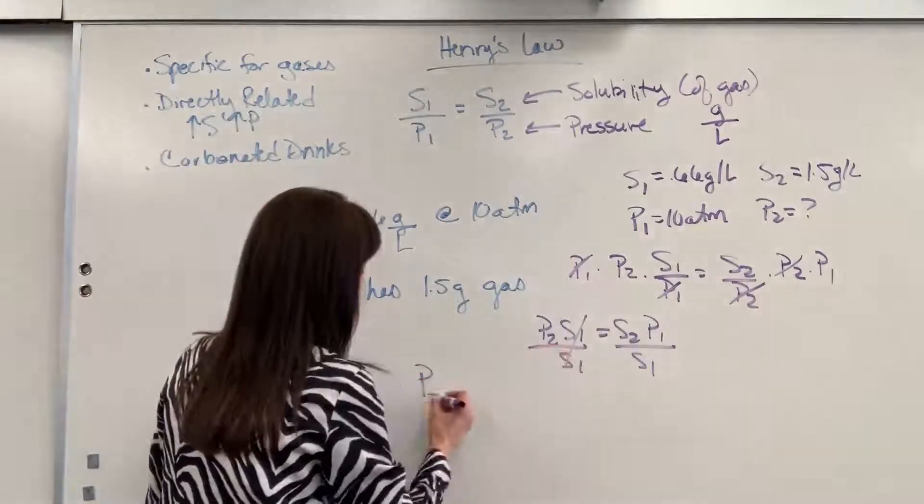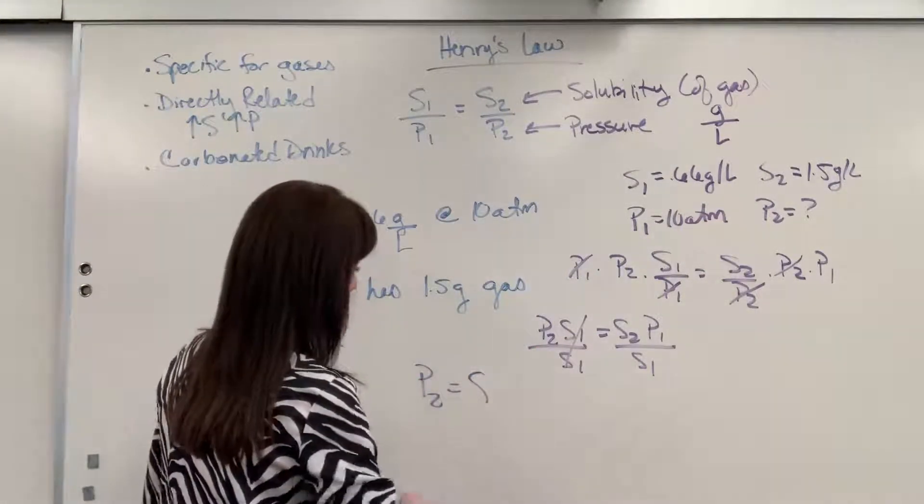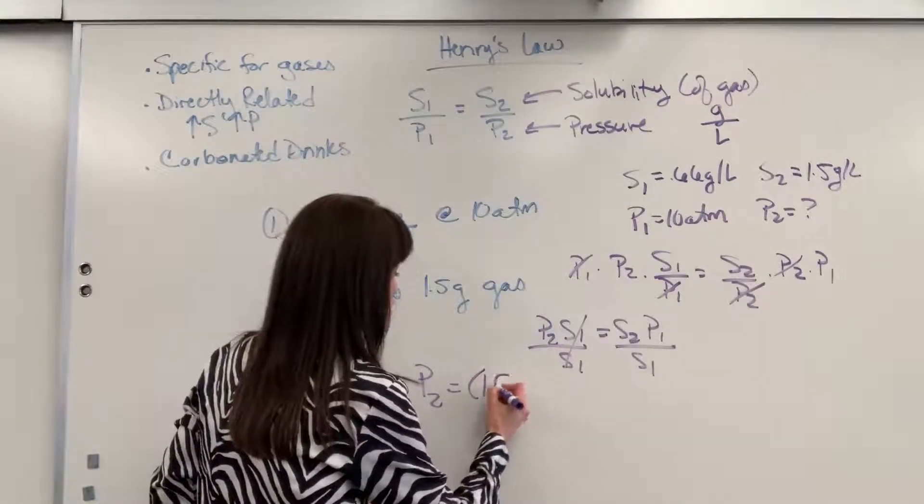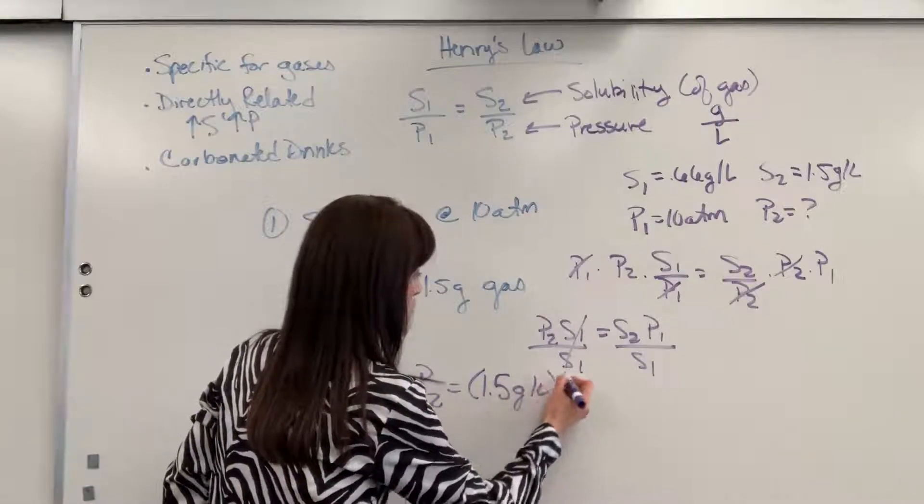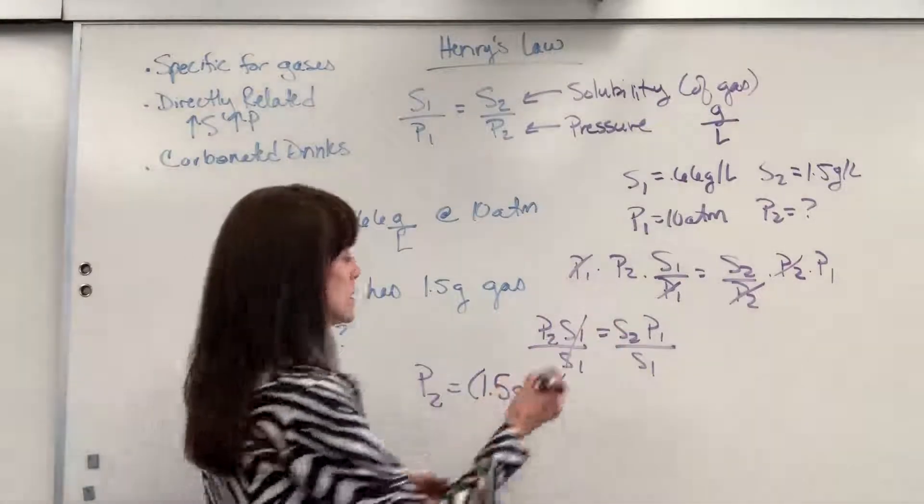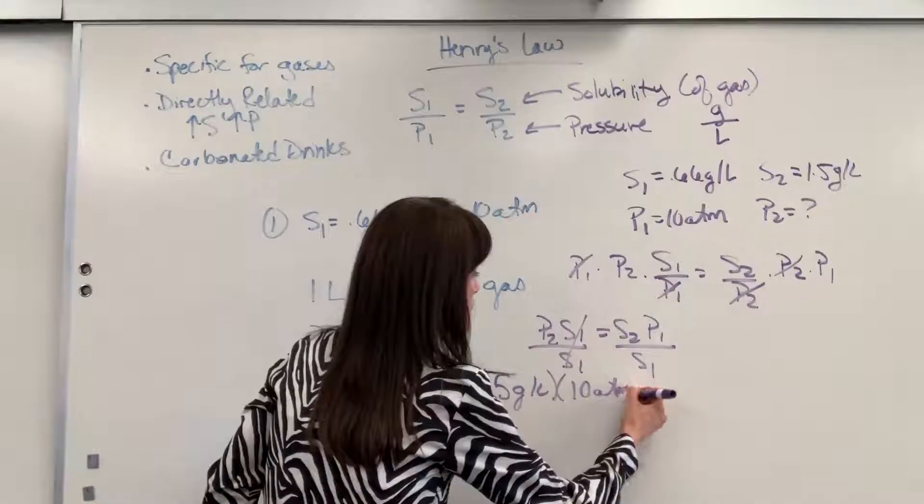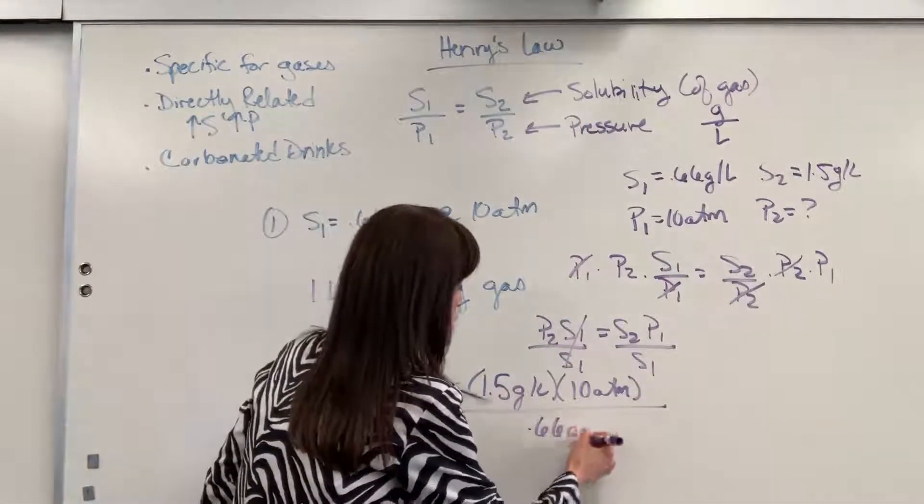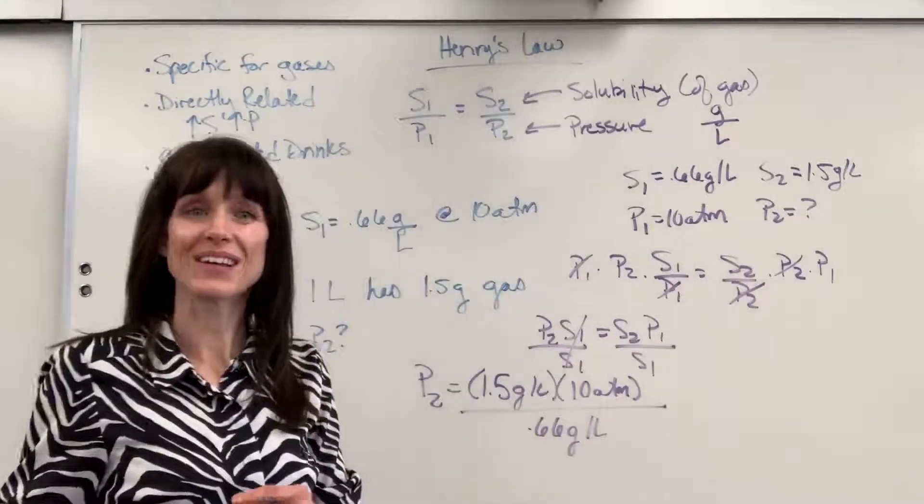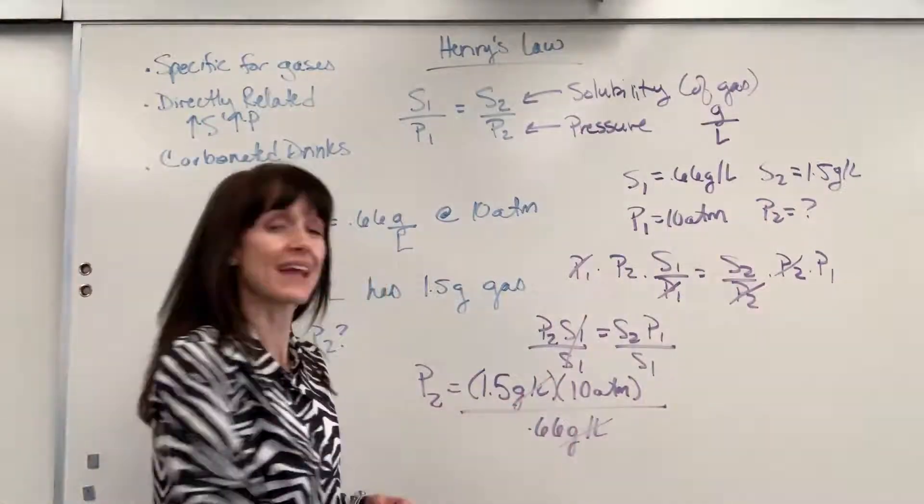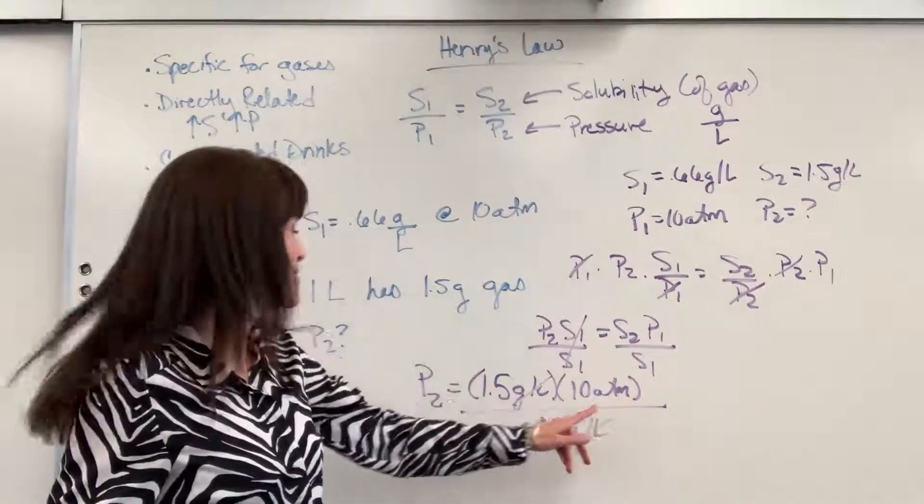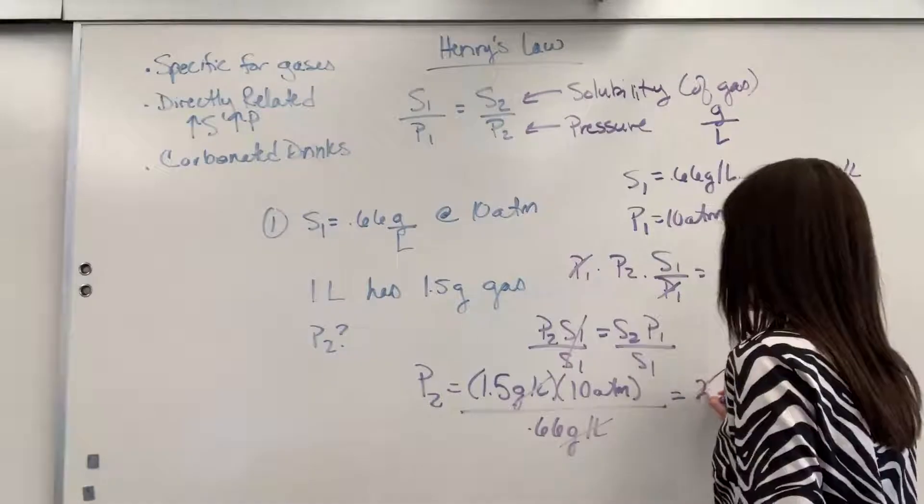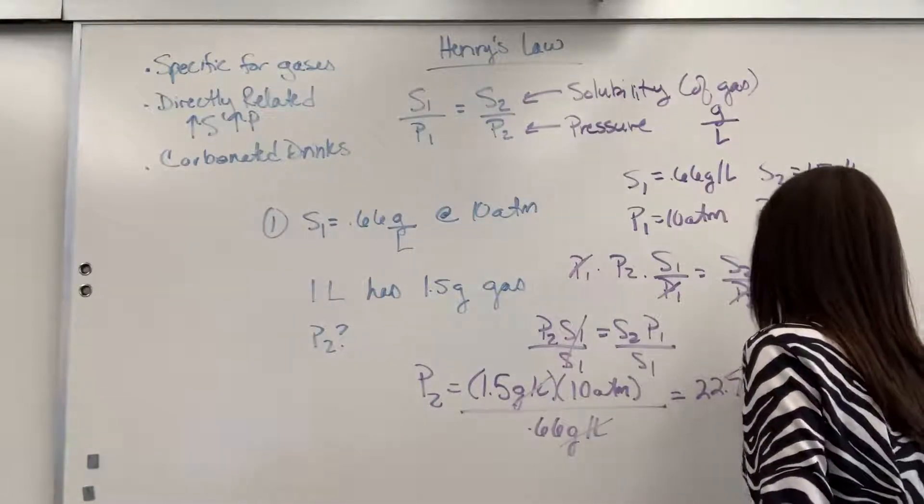So P2 will be S2. Excuse me. My S2 was 1.5 grams per liter times P1 was 10 atm divided by S1, which was 0.66 grams per liter. Take a look at our units. Grams per liter cancels. And what am I left with? Pressure. So 1.5 times 10 divided by 0.66. And that's going to give us 22.7 atm.